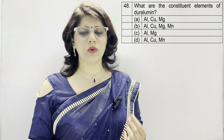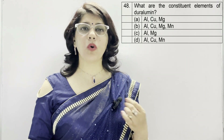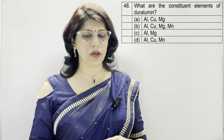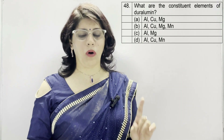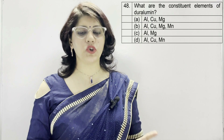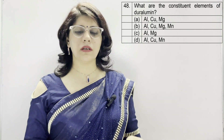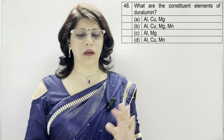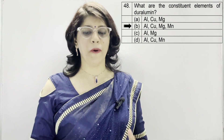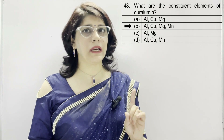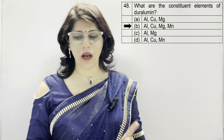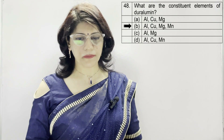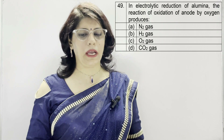In question number 48: what are the constituent elements of duralumin? A: aluminium, copper and magnesium. B: aluminium, copper, magnesium and manganese. C: aluminium and magnesium. D: aluminium, copper and manganese. The correct option is B — aluminium, copper, magnesium, and manganese are the constituent elements of duralumin.